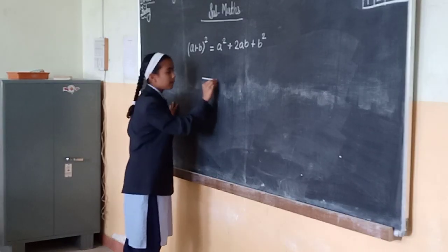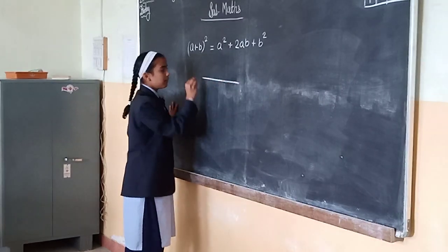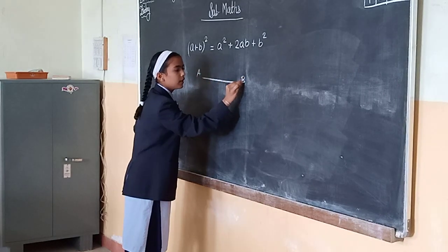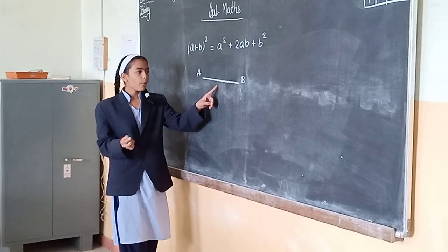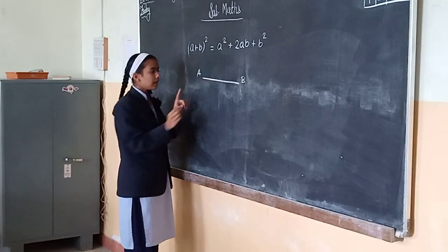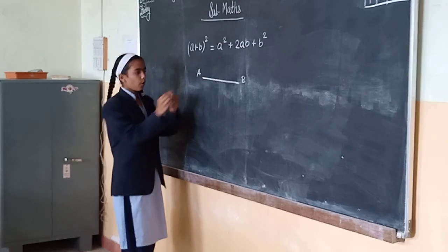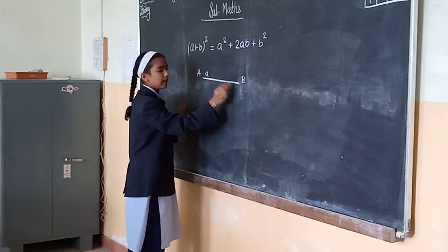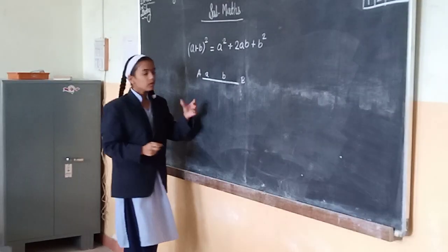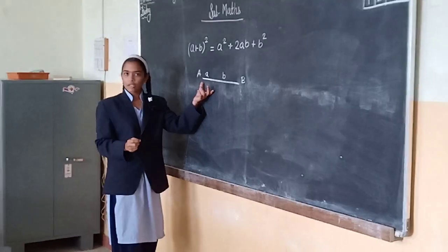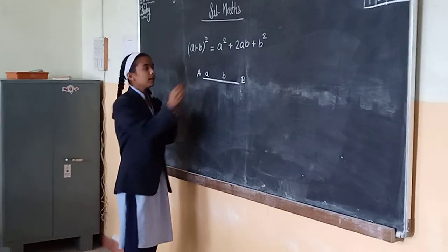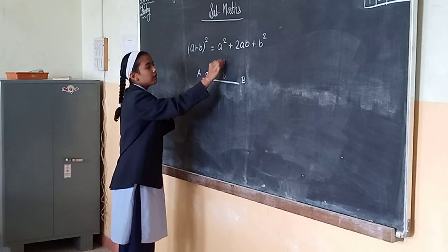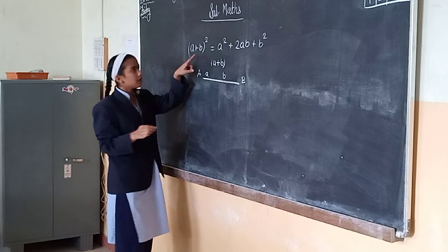Take a line segment and name it as a and b. Take any point on this segment — the length from this point, name it as a, and the remaining length b. Then the total length of this segment will be a plus b.